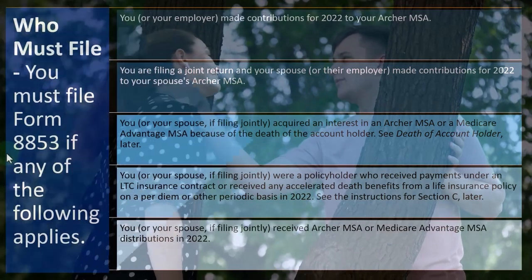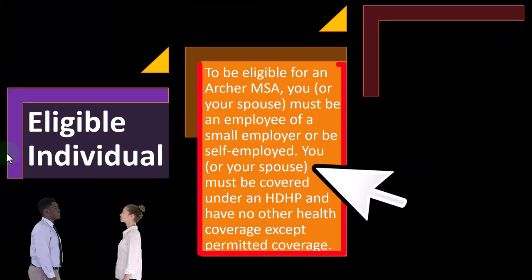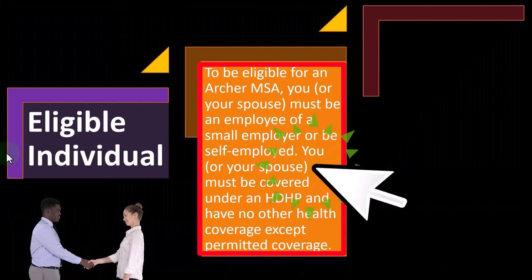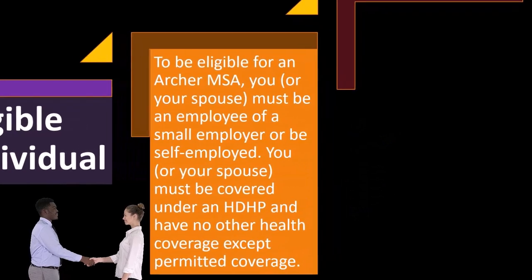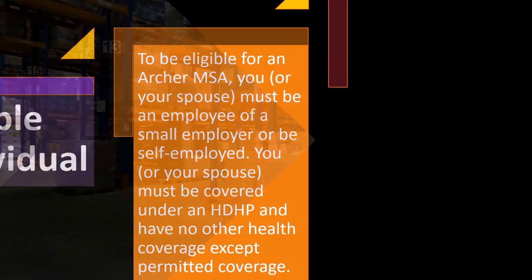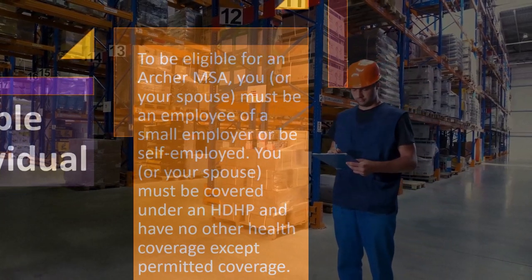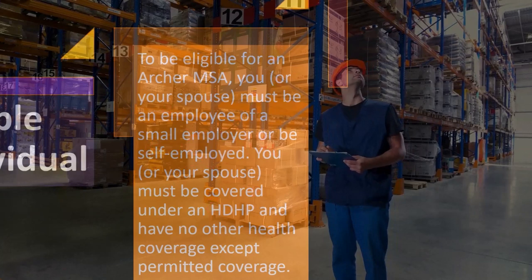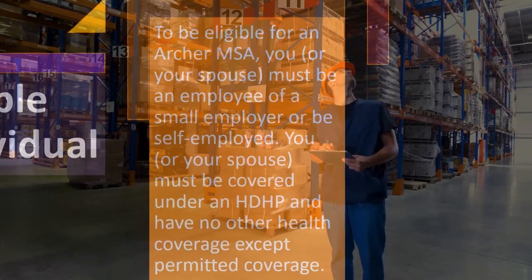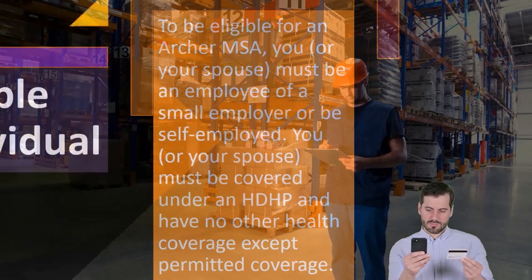You can take a look at the instructions yourself if any of these things apply — you can dive into it in more detail. So for eligible individuals: to be eligible for an Archer MSA, you or your spouse must be an employee of a small employer or be self-employed, and you or your spouse must be covered under an HDHP — the high deductible health plan — and have no other health coverage except permitted coverage.